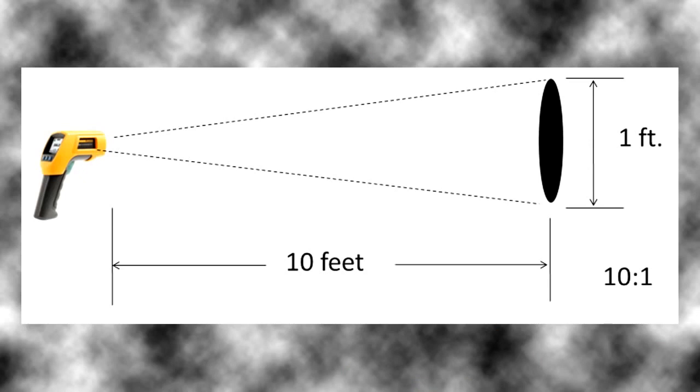Distance to spot ratio is used to express the ability of an infrared thermometer to measure temperature of a surface from a distance. The D to S ratio is the ratio of the distance from the IR tool that you're using to the surface that you're measuring.